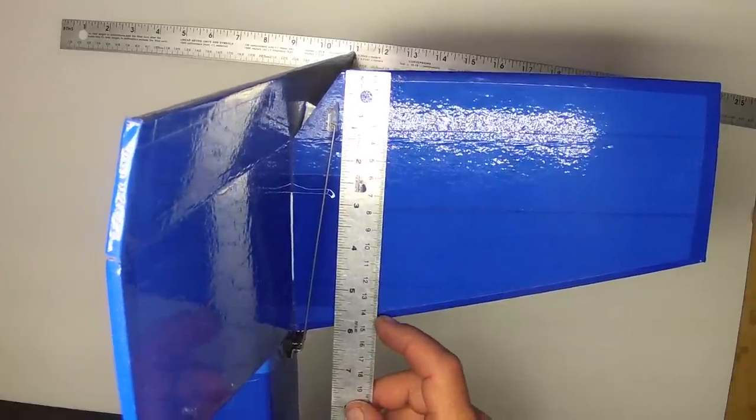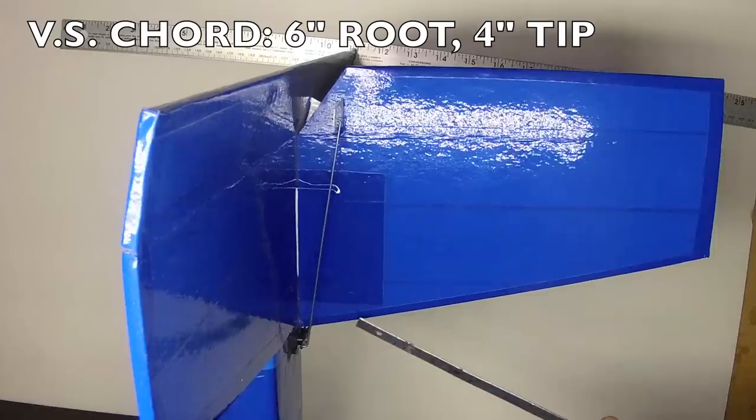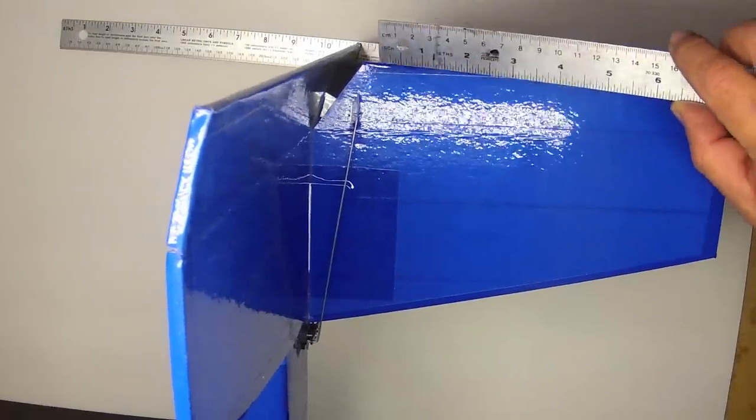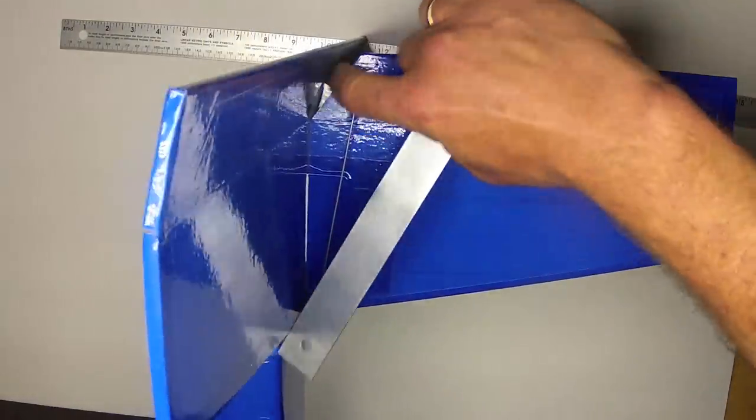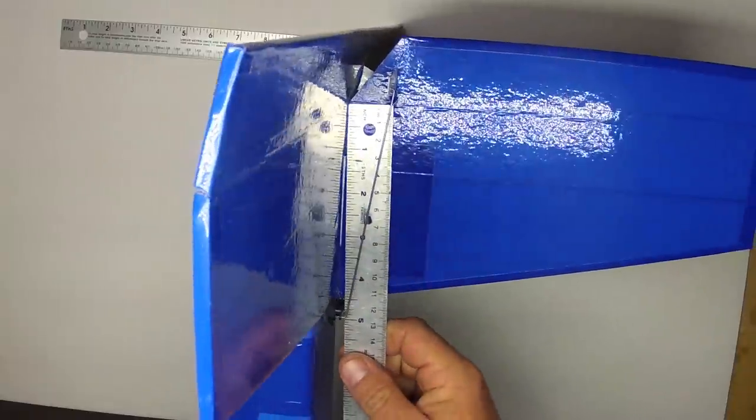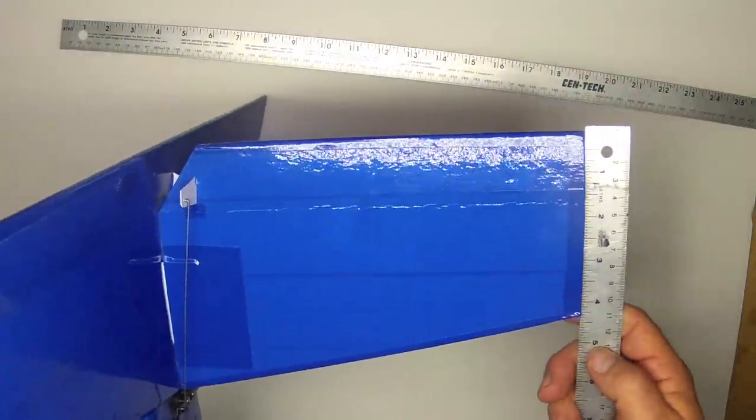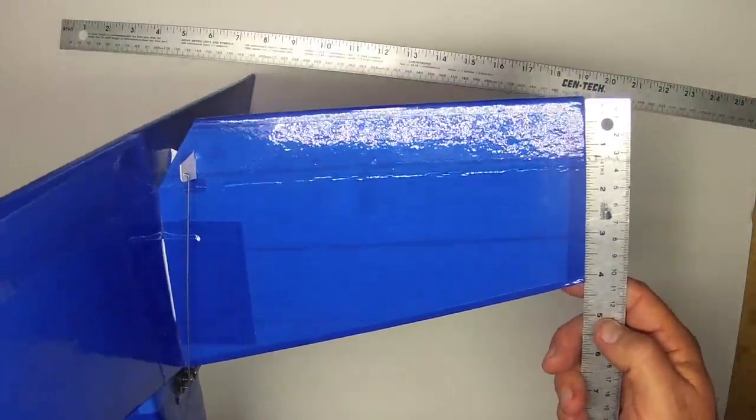The effective total root cord of the vertical stabilizer is 6 inches, and by that I mean the distance between the true leading edge and the ultimate trailing edge, not accounting for this little notch right here. Obviously the attachment point itself is only about 4.5 inches to the fuselage. And the total tip cord, including the rudder itself, is 4 inches.